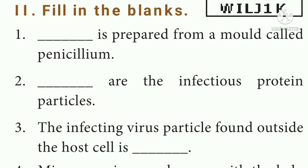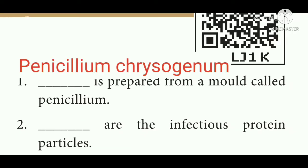Roman numeral 2, Fill in the blanks. Question 1: DASH is prepared from a mold called Penicillium. Answer: Penicillium chrysogenum.